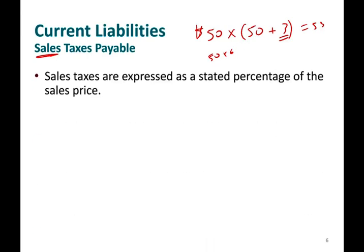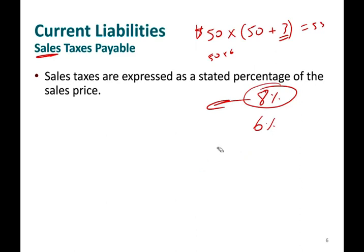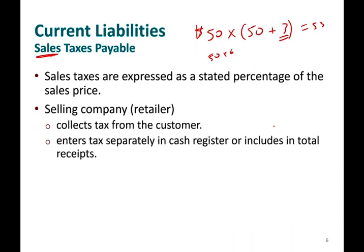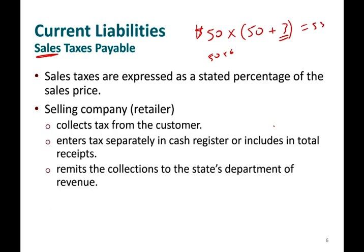Sales taxes are expressed as a stated percentage of the sales price. For example, in New York City there's a sales tax of 8%; in Pennsylvania, 6%. Many people travel to Pennsylvania to buy clothing because it's cheaper. In Delaware, there is no sales tax, so people drive there to buy high-priced items. By law, retailers collect tax from the customer and remit the collection to the state department of revenue — in Pennsylvania, they send the money to Harrisburg.